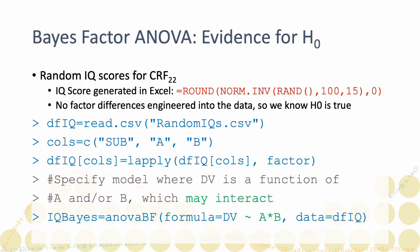So, we know the null hypothesis to be true. Each score is randomly drawn from a normal distribution with a mean of 100 and a standard deviation of 15.